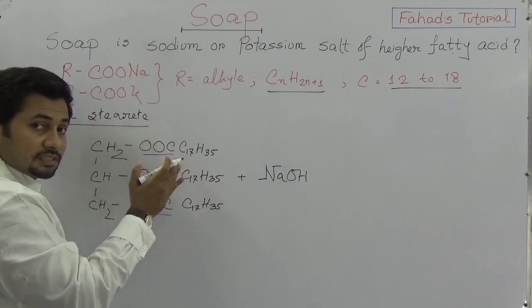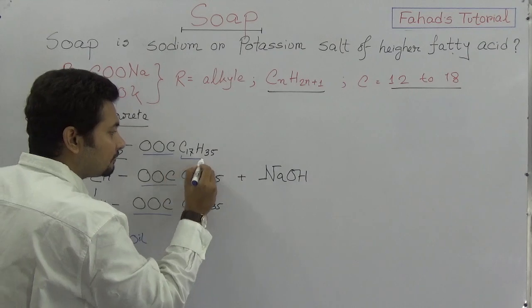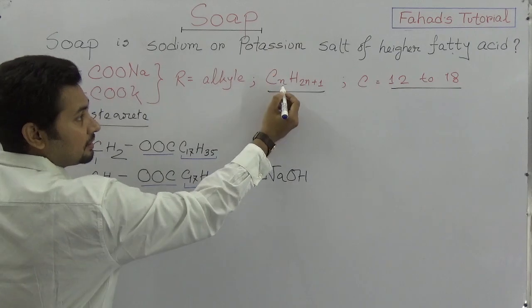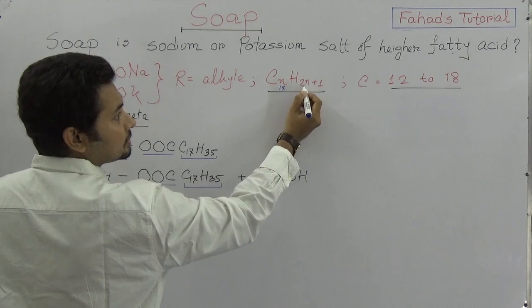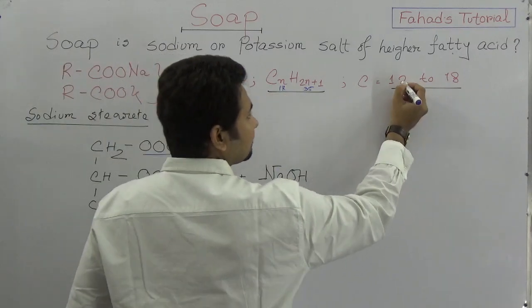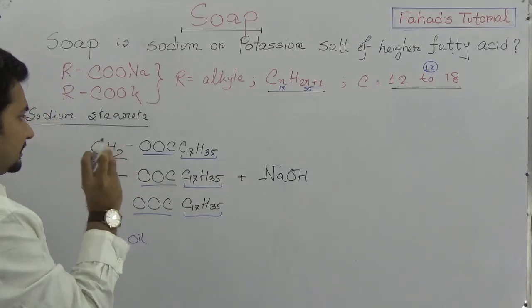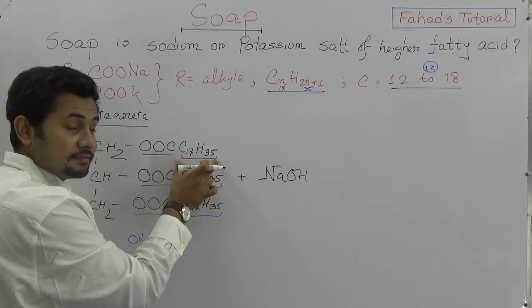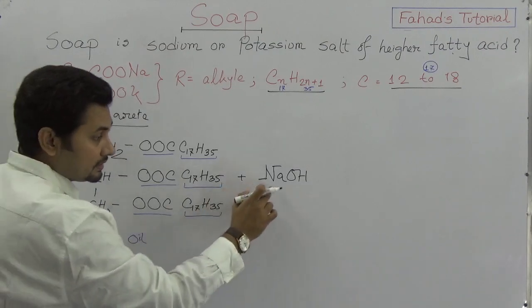You see the last part of the alkyl is C17H35. The number of n is 17, so it would be 17 times 2 is 34 plus 1, which is 35. The number of carbons is 12 to 18, so we took 17 as an example. This is the total formula of oil.